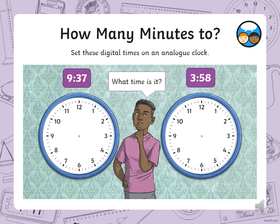Set these digital times on an analog clock. Have a look at your empty clocks, or draw it out if you can't access the sheets, and draw out these examples — 9:37 and 3:58. Pause the video before I show you the answers.